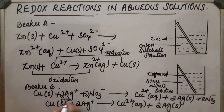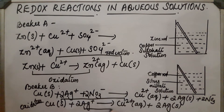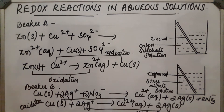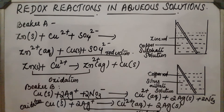This reaction is an oxidation reaction. Copper acts as the reducing agent and undergoes oxidation. Silver acts as the oxidizing agent, undergoes reduction, and metallic silver gets deposited on the copper rod.